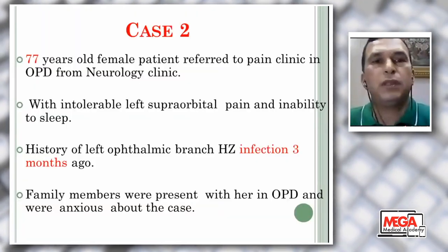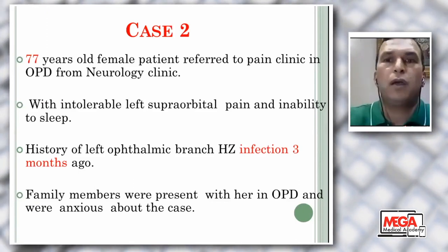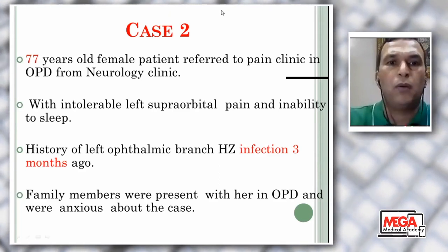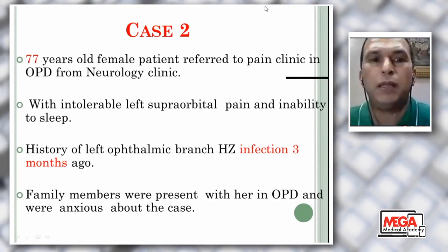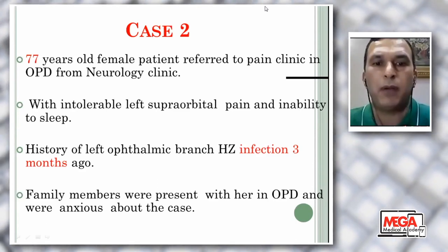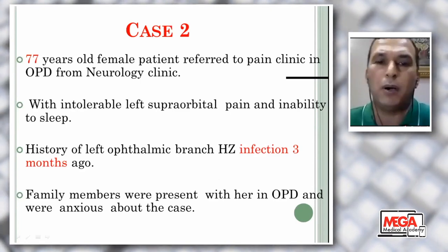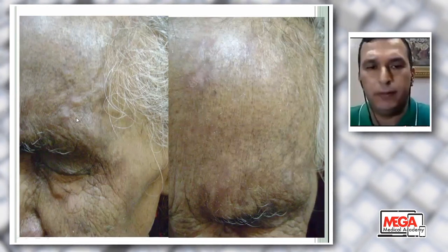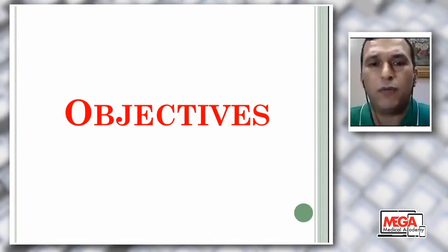Another case scenario: a 77-year-old female patient referred to our clinic from the neurology department with intractable left supraorbital pain and inability to sleep. History of left ophthalmic branch herpes zoster infection three months ago. Family members were present and anxious about the case. This is our patient — old age female with ophthalmic branch herpes zoster followed by post-herpetic neuralgia. Notice the scarring over the supraorbital nerve and over the left forehead.